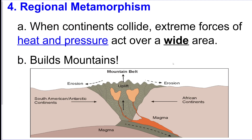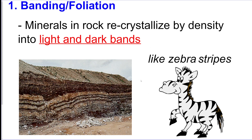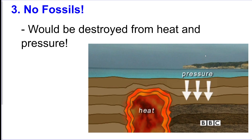Regional metamorphism comes from a lot of pressure, like two continents colliding, which can form mountains that have a lot of metamorphic rocks inside them. Banding is very common in metamorphic rocks — it looks like zebra stripes, like this piece of gneiss. Distorted structure means there are wavy patterns in the rock because it was squeezed. There are rarely any fossils in metamorphic rocks because they're normally destroyed in the process of creating them.